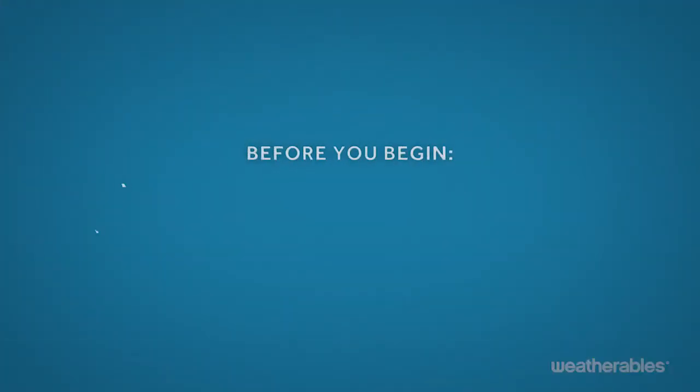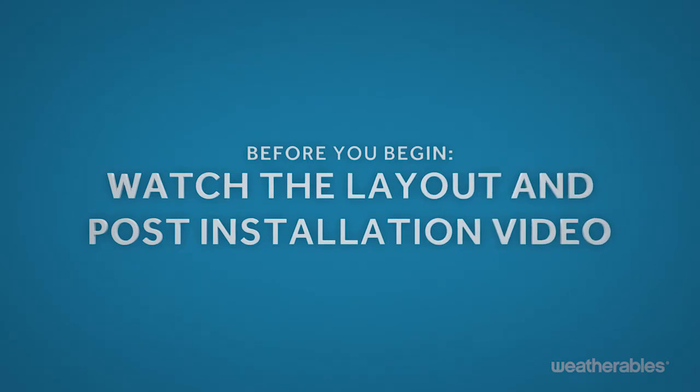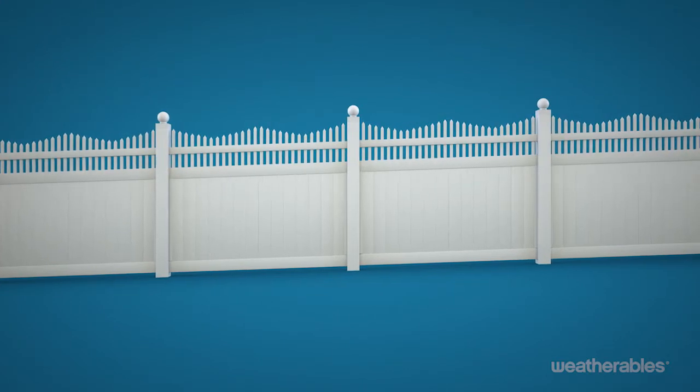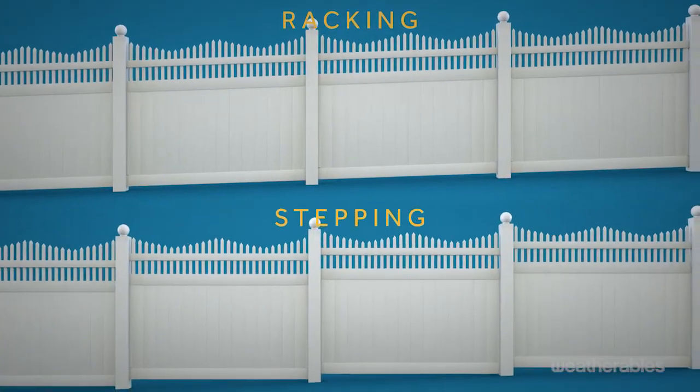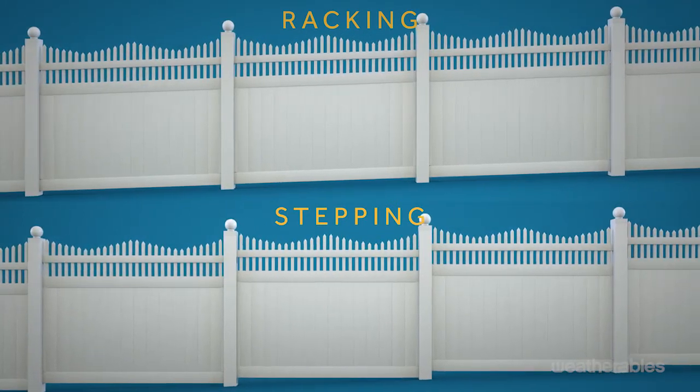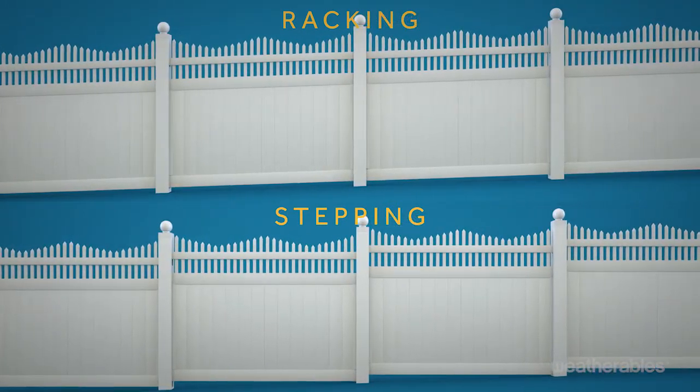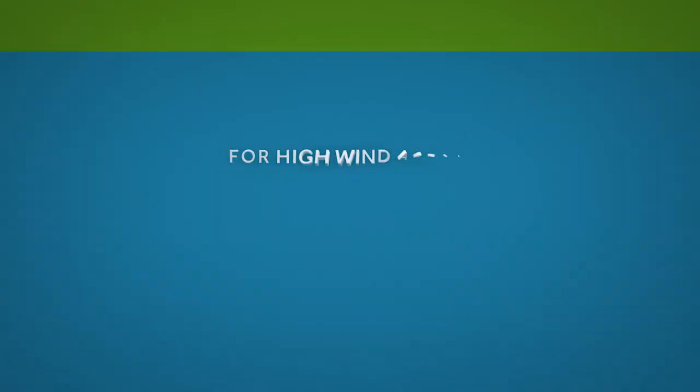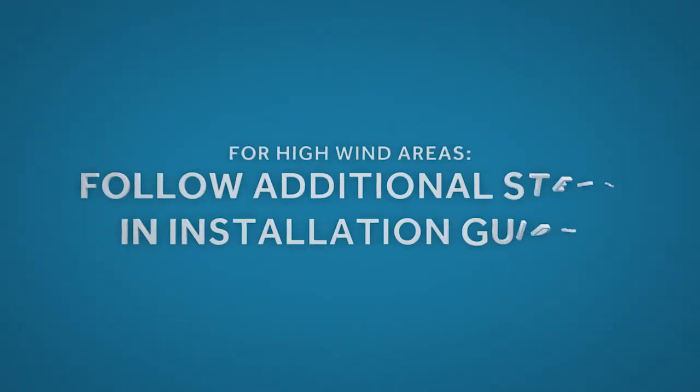Before you begin the installation process, be sure to also watch the layout and post installation video. This fence can accommodate a slope if installed using the racking or stepping method. Refer to the installation guide to determine the exact slope your fence can accommodate and the best method of installation. For high wind areas, be sure to follow the additional steps provided in the installation guide.